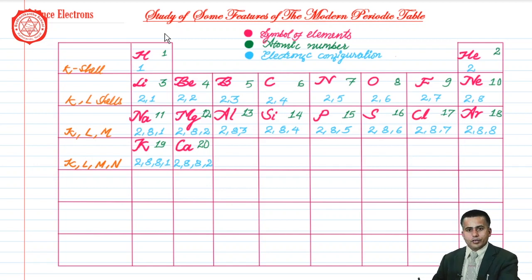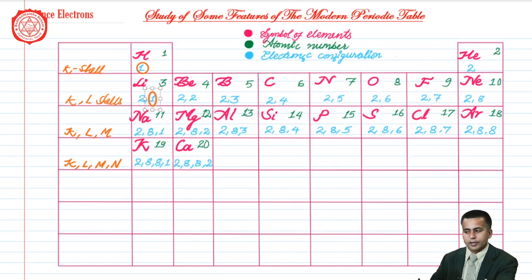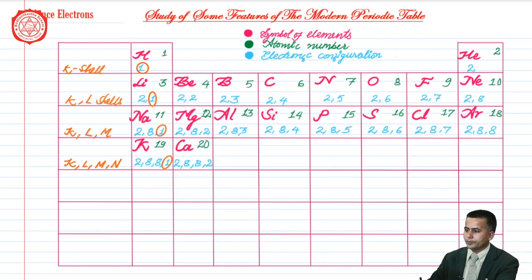Now look at the first vertical column starting from hydrogen up to potassium. In hydrogen there is only one electron, which is itself the single valence electron. Likewise, lithium contains only one electron in its valence shell, and sodium also has only one electron in its valence shell, and potassium also contains only one valence electron. Now let us write the number of valence electrons.